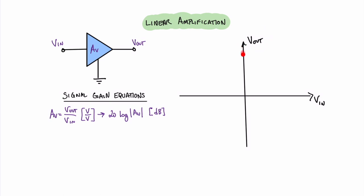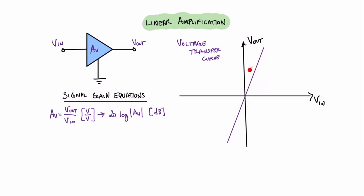Over here on the right I have a graph with voltage output on the vertical axis and voltage input on the horizontal axis. Since both axes are in volts, this graph is called a voltage transfer curve. It gives us a sense of what the input signal will look like when transferred to the output. Because the amplifier is linear, the transfer curve is a straight line. The slope of this line is the voltage gain A sub V.